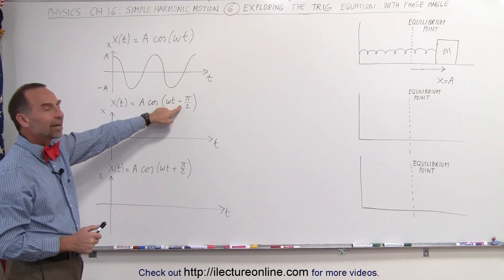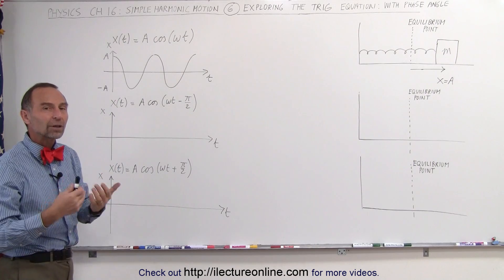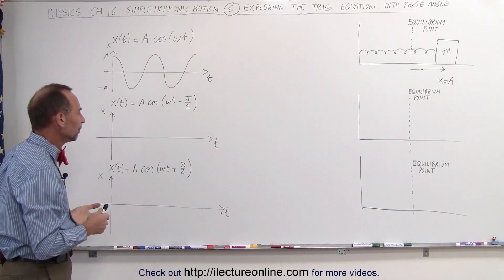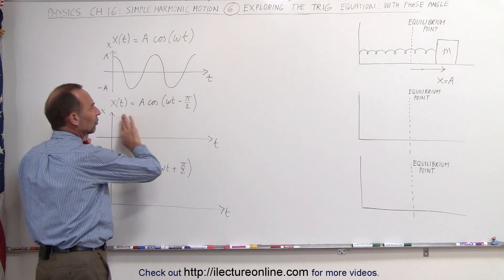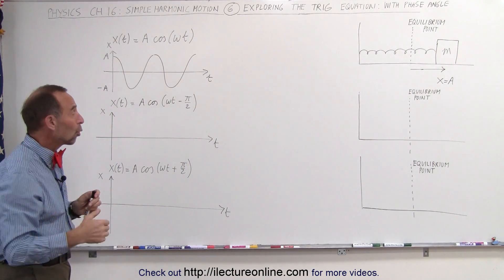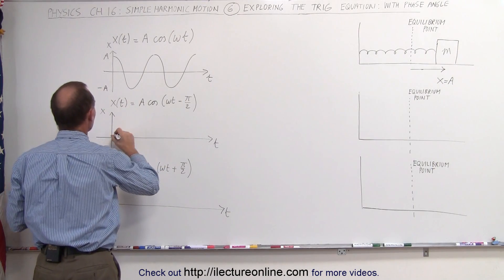But what if we add a phase angle, minus pi divided by 2? That's 90 degrees, that's one quarter of a full cycle. What does that do? Well, this really displaces the equation to the right by pi over 2, which would be one quarter of a period in time. That means this function will now look like this.